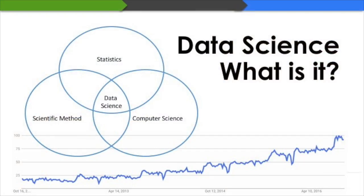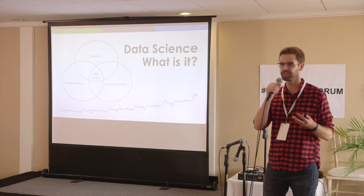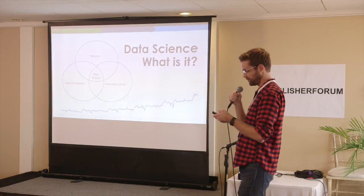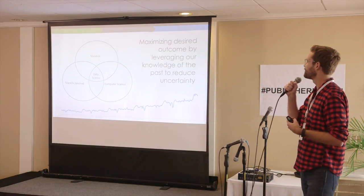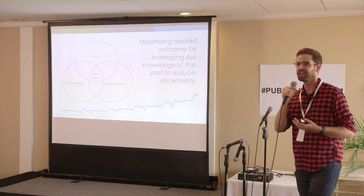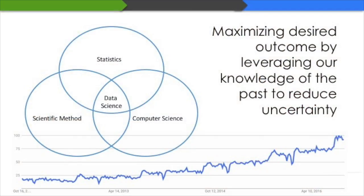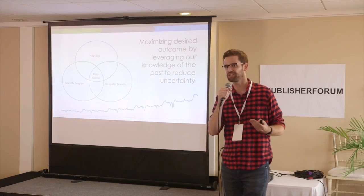Data science is currently a buzz term you've probably all heard. If you look at Google search trends, it has exponential growth over the last five years and it's still going up. But if you actually Google 'what is data science,' you don't get a straightforward answer. On a couple of pages you'll see a three-circle Venn diagram — statistics, computer science, and scientific method — and at the intersection is data science. So I took a stab at defining it: data science is about maximizing our desired outcome by leveraging the knowledge of our past to reduce uncertainty. To boil it down even further, it's about making intelligent predictions using data.